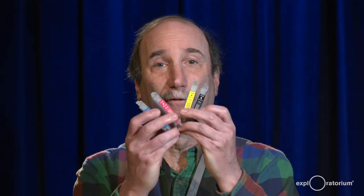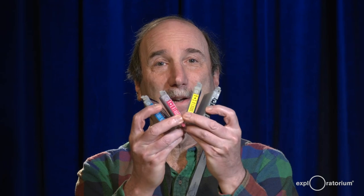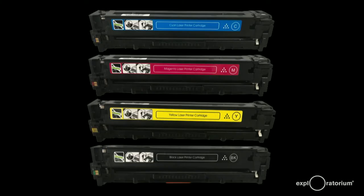Look inside your inkjet printer. You'll find four cartridges, cyan, magenta, yellow, and black, just like you might expect. If you check out inside of your color laser copier or printer, you'll find our now familiar CMYK cartridges.